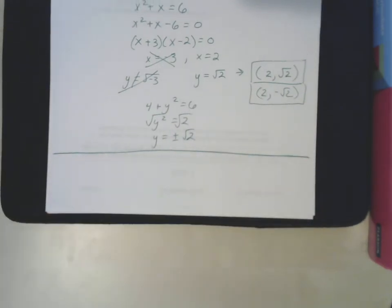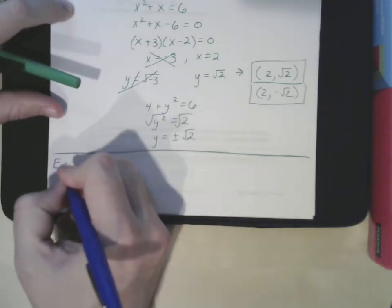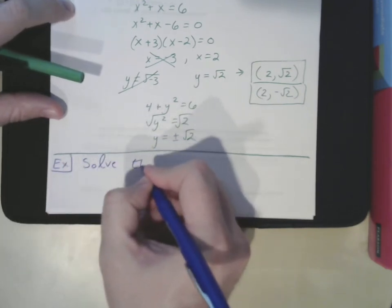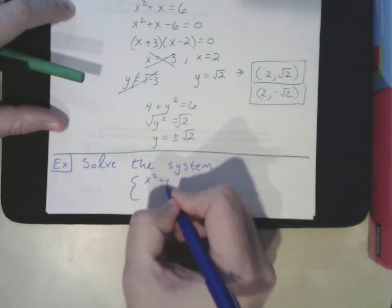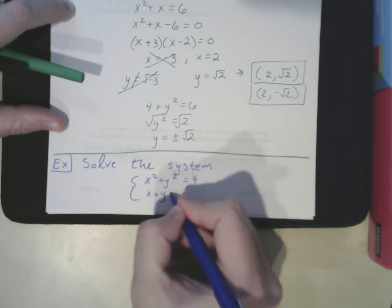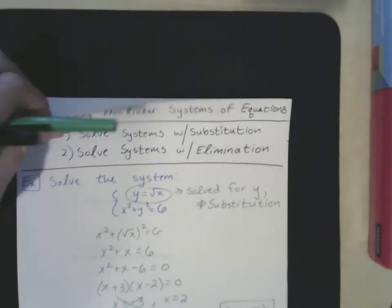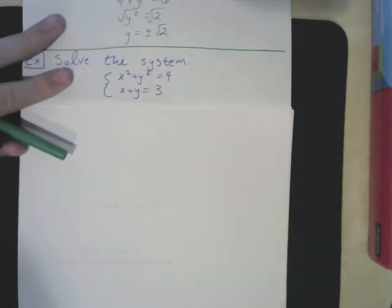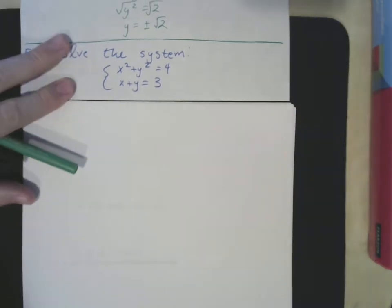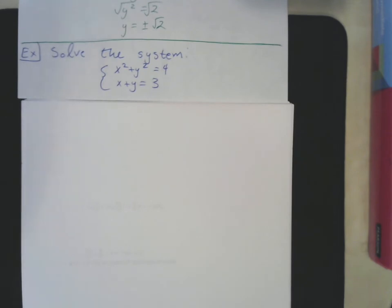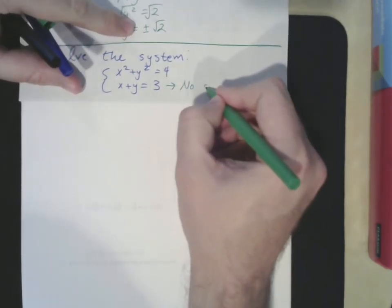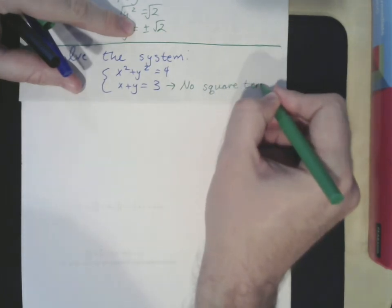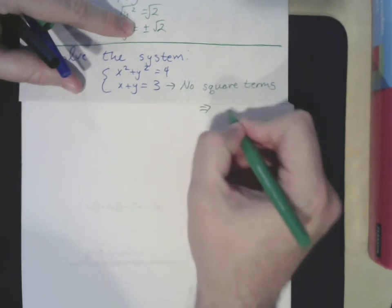Moving on to the next example, we solve the system x squared plus y squared equals 4, and x plus y equals 3. This is a circle from our conic sections and a line. Since the second equation has no squared terms — no x squared, no y squared — substitution is still going to be the best choice here.